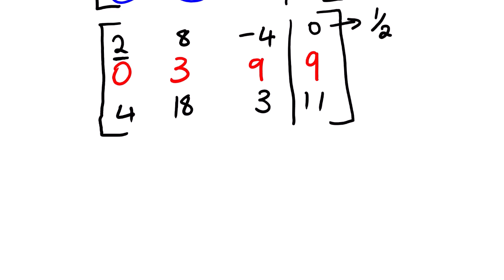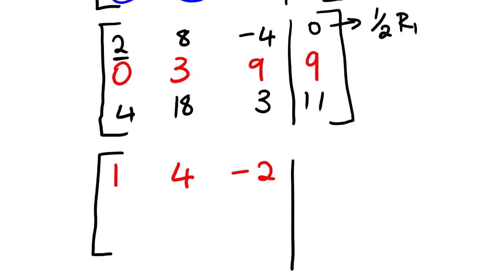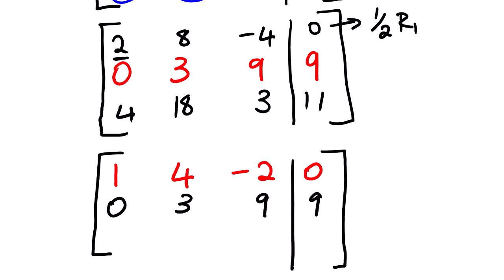Now I'm going to multiply 1/2 on row number 1. So row number 1 will change: 1/2 multiplied by 2 is 1; 1/2 multiplied by 8 is 4; 1/2 multiplied by negative 4 is negative 2; and 1/2 multiplied by 0 is 0. So we rewrite everything: 4, 18, 3, and 11.